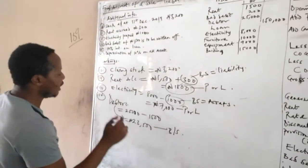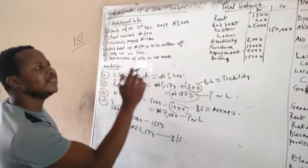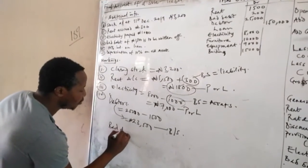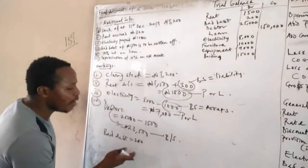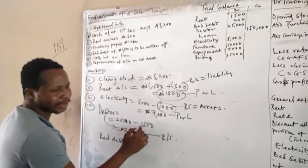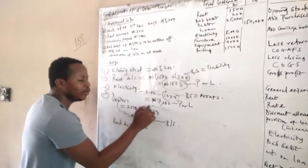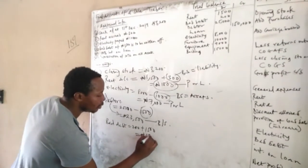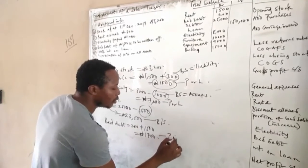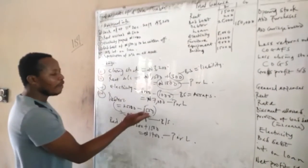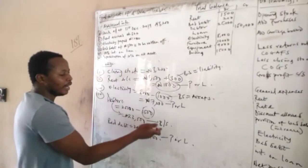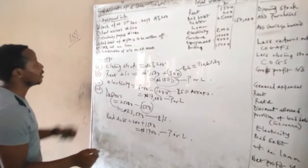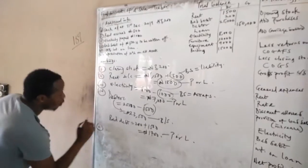Also check your trial balance for any existing bad debt figure. If there is a bad debt of 200 already in the trial balance, add it to the new bad debt of 1,500, giving 1,700. This 1,700 goes to your profit or loss account, while the adjusted debtors figure goes to the balance sheet.